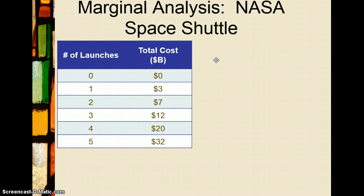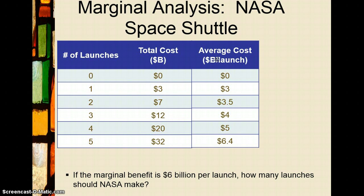The average cost at four launches was five billion dollars per launch — twenty billion divided by four — and the average benefit was six billion dollars per launch — twenty-four billion divided by four. The professor used this average analysis in front of Congress, around 1996, to argue for expansion. But let's use marginal analysis instead to see if we really should expand.